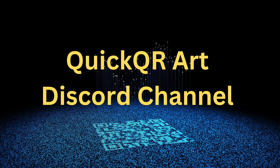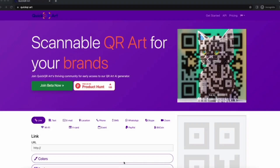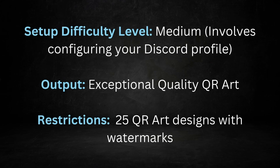This wraps up our first tool. Now we'll move on to the next tool, QuickQR Art. QuickQR Art is a user-friendly website that assists brands in crafting scannable QR codes. Currently, QuickQR Art is in the beta testing phase, and individuals can become part of the community to gain early access to the QR art AI generator. Using this method you can generate 25 QR art designs that have watermarks. If you wish to generate additional designs or obtain watermark-free artwork, please refer to the pricing section on their website. I found the quality of generated images really good.